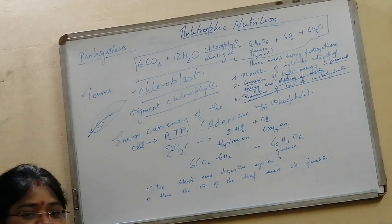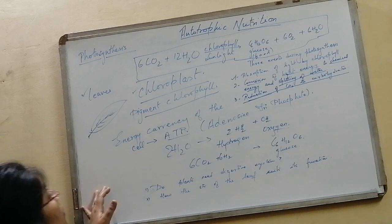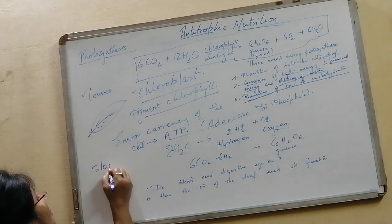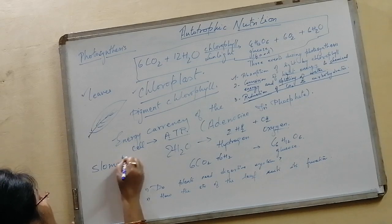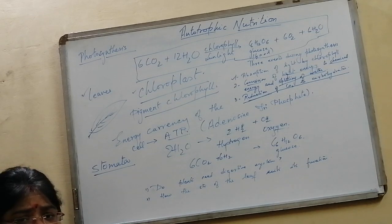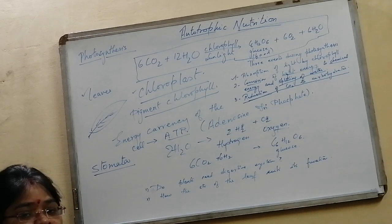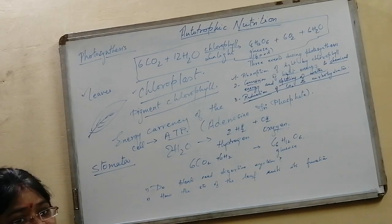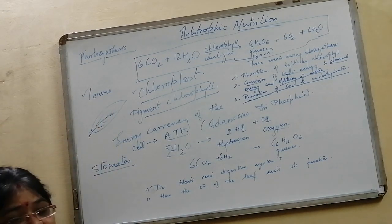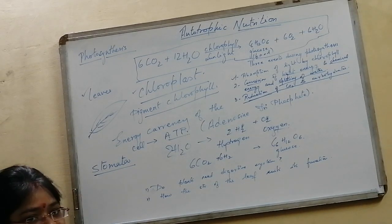All of you must have read earlier that plants have small structures called stomata. Stomata are minute openings in the leaf through which exchange of gases takes place. Through stomata, carbon dioxide enters inside the leaf, goes to the cell, and then enters into the chloroplast.